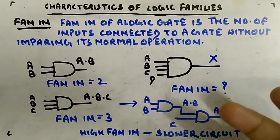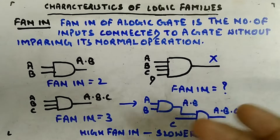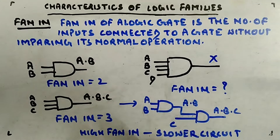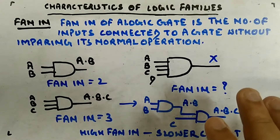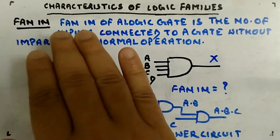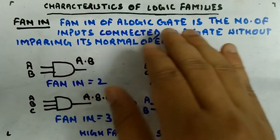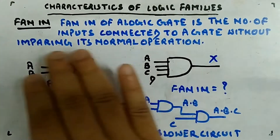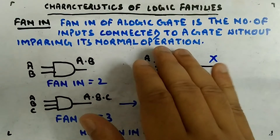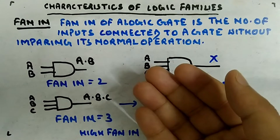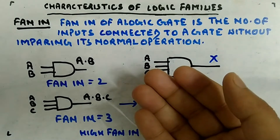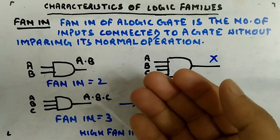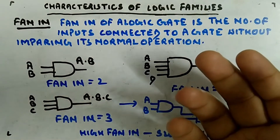Let's look at the next characteristic of a logic family, called fan-in. Fan-in is simple compared to fan-out because it is just the maximum number of inputs a gate can have. Fan-in of a logic gate is the number of inputs connected to a gate without impairing its normal operation — so how many inputs at maximum you can connect at the input of a gate so that it performs its normal operation.